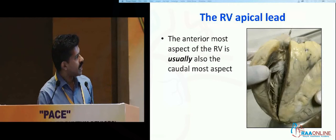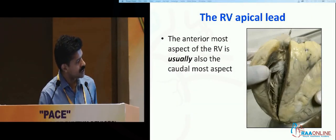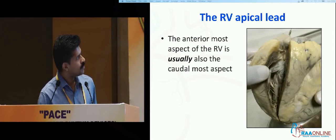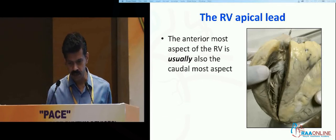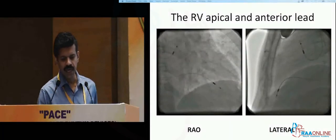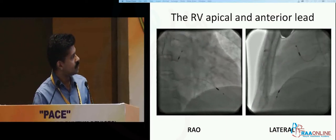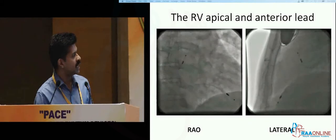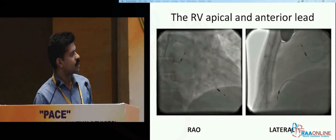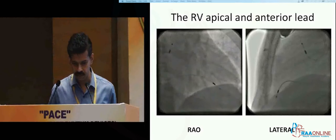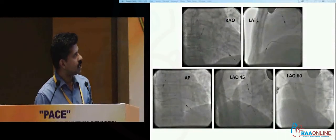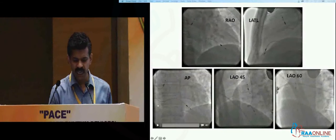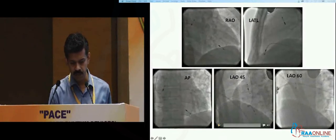For the RV apical lead, our idea is to get the lead as close as possible to the apex, because that's the most heavily trabeculated part of the right ventricle — usually the caudal-most and anterior-most aspect. So this is how an ideal apical lead would look: it will go down towards the dome of the diaphragm in the right anterior oblique, go almost to the anterior border of the heart in RAO, and in lateral it will look like it is virtually touching the sternum. The other views are not really conclusive of the apex.